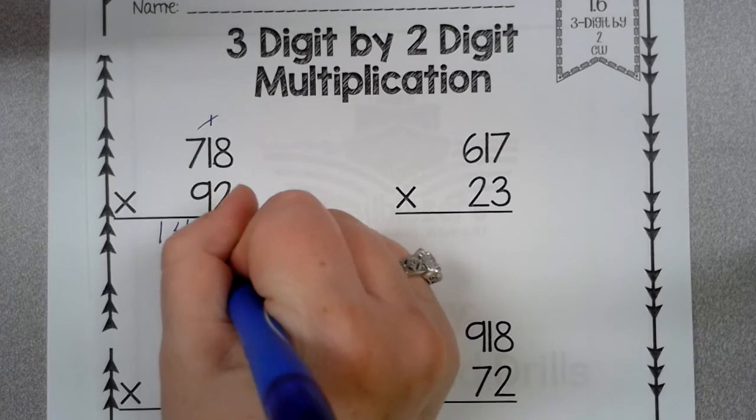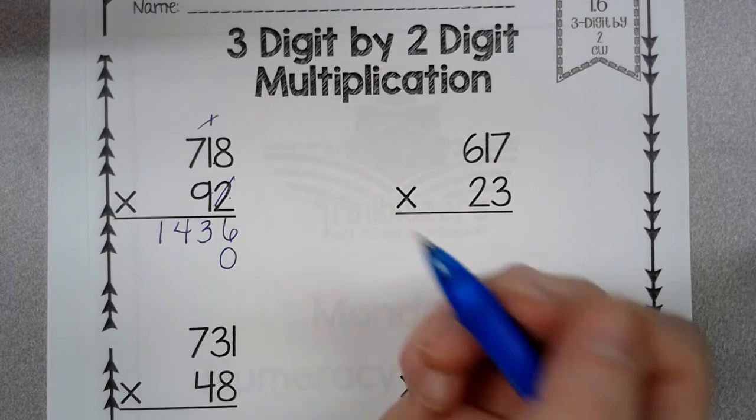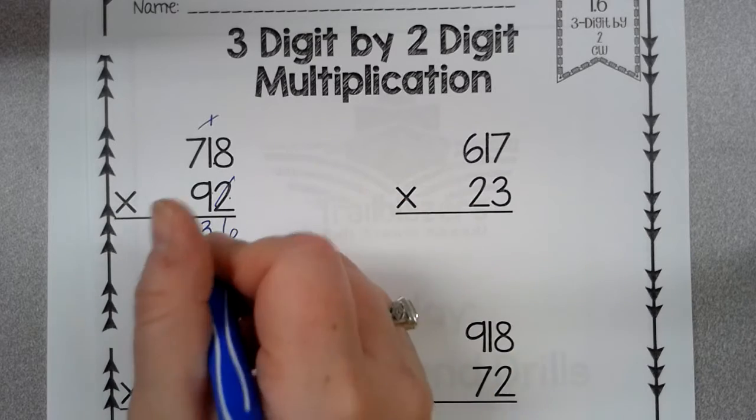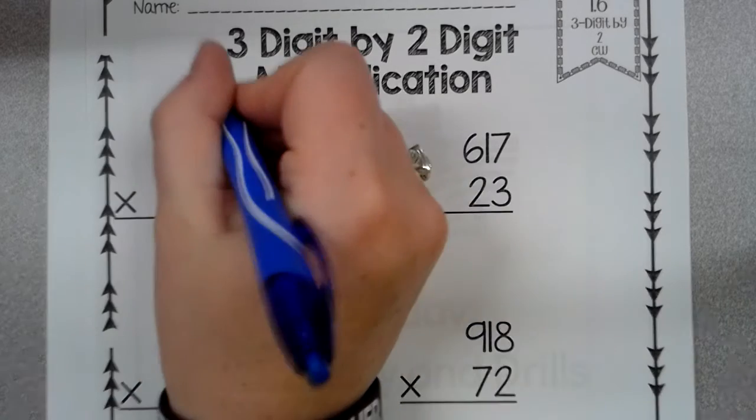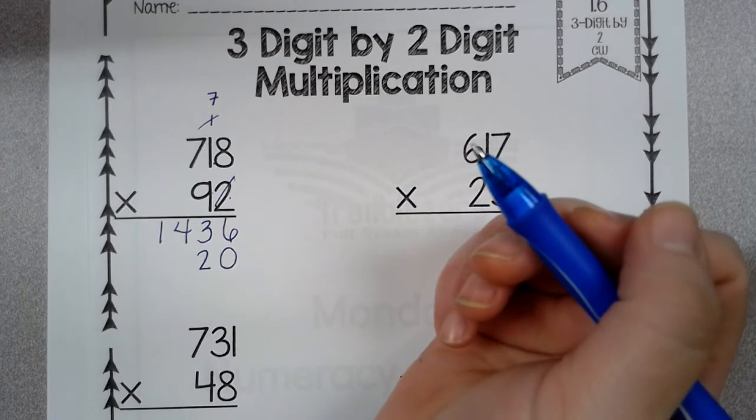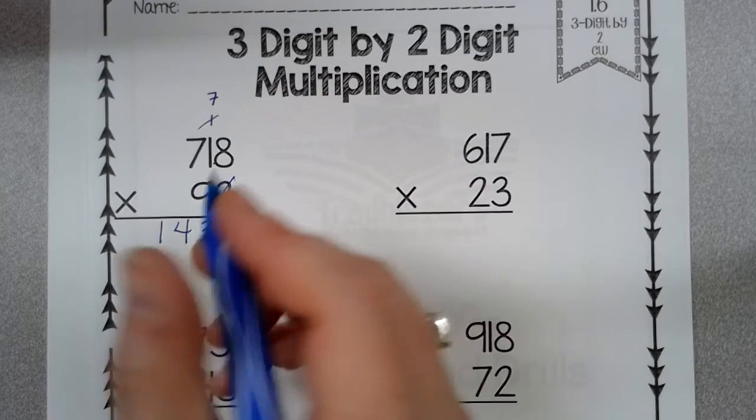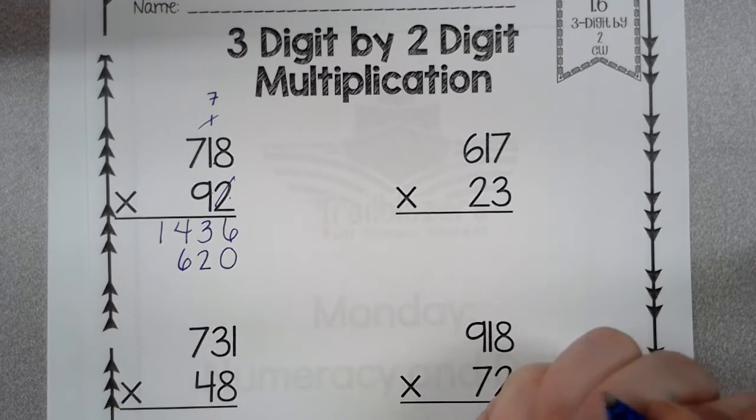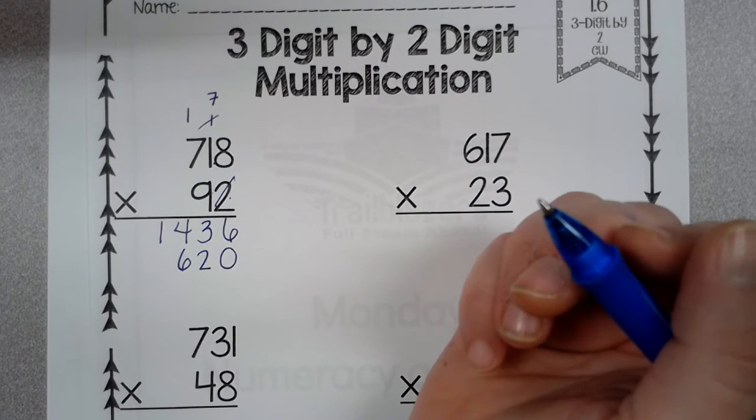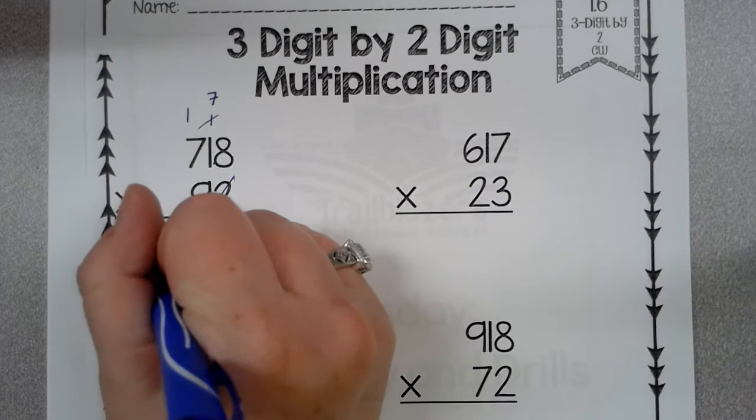Now I'm going to line everything up. I'm going to put a zero in the ones place because I'm in the tens place now. Nine times eight is 72. So I'm going to put a two here, seven up there. Nine times one is nine plus seven is 16. So I'll line my six up right there and carry my one.